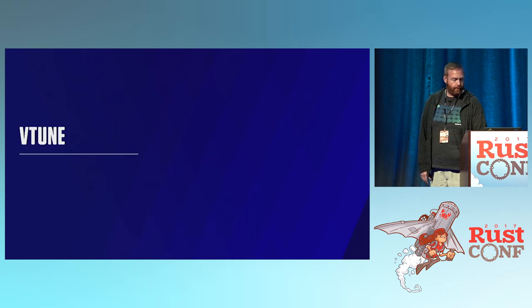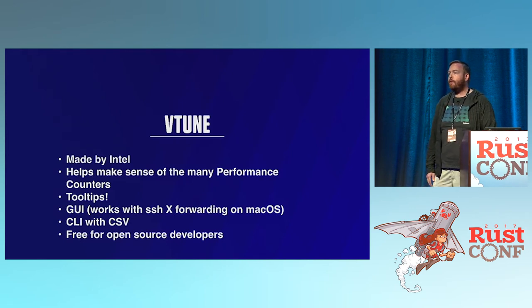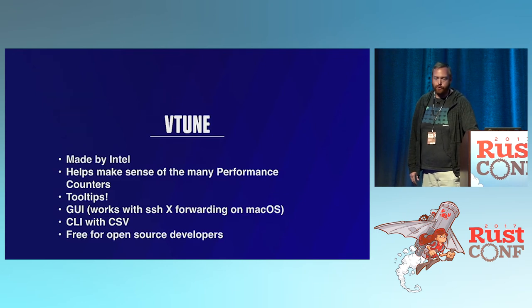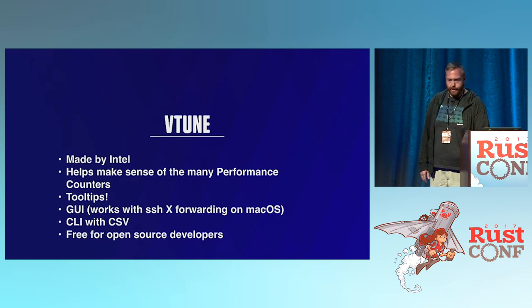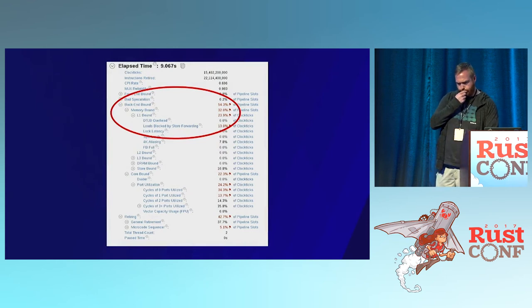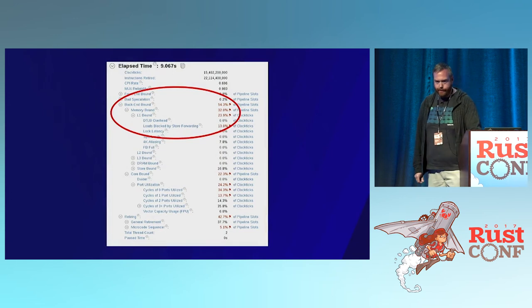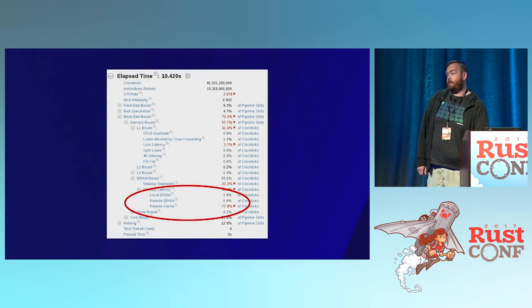The last tool I want to talk about is probably the most complex: VTune. Intel engineers had the same question — how well is my program running? — so they added performance counters, and then had to answer what do all those counters mean, so they made this commercial tool called VTune. It's an extraordinarily complex tool but you can get your head around it with practice. It has tooltips, a GUI with CSV export, and a CLI. If you're an open source developer, you can get a free license. Looking at the single-threaded benchmark in the general exploration view, I can tell it's memory bound — specifically back-end bound on memory. The multi-threaded benchmark is also back-end bound, but something really stood out: I was bound on a remote cache.